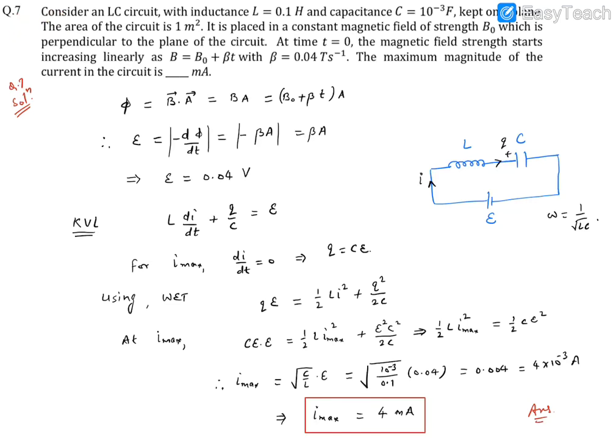Question number seven. It reads, consider an LC circuit with inductance L = 0.1 henry and capacitance C = 10^-3 farad kept on a plane.